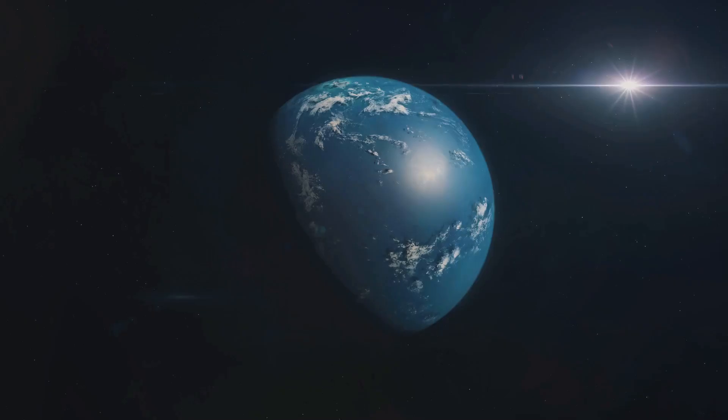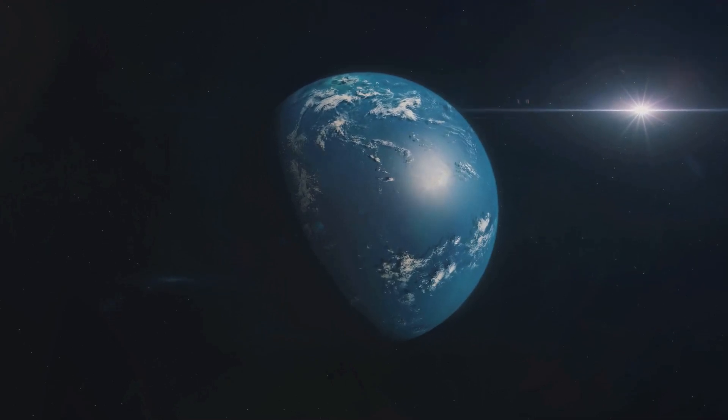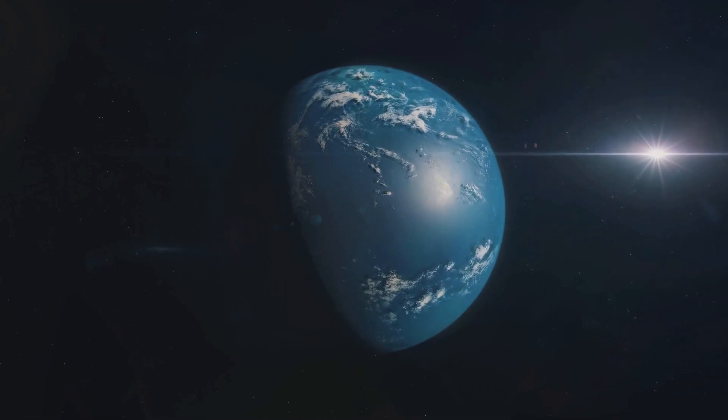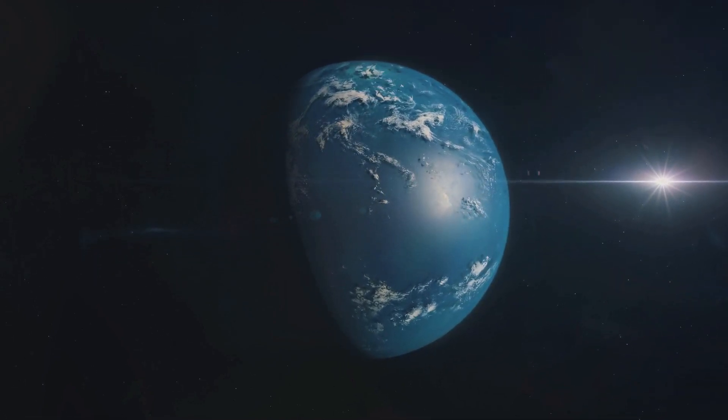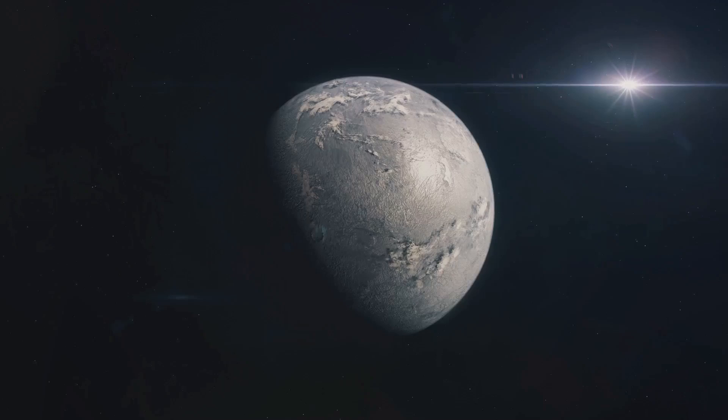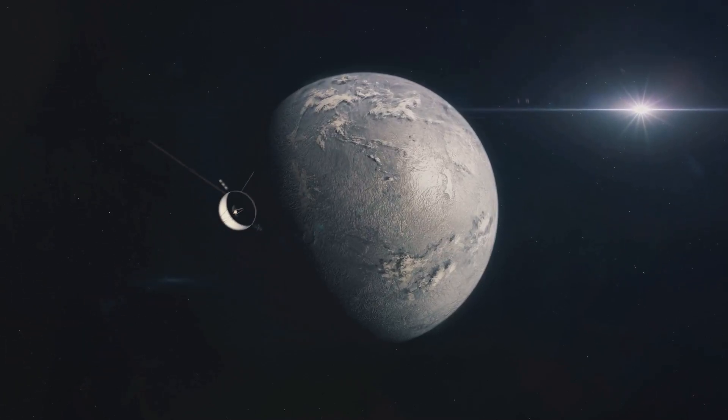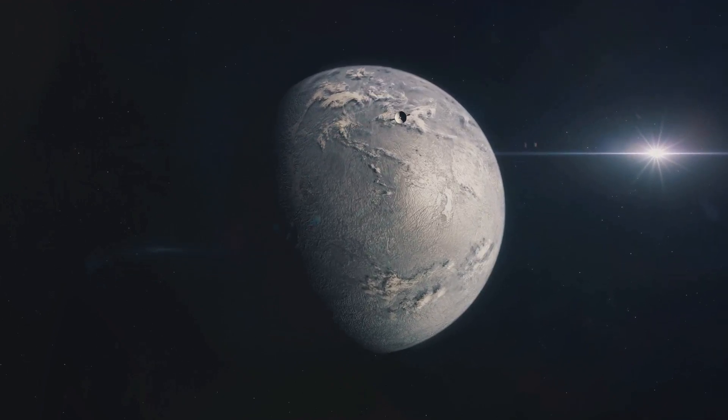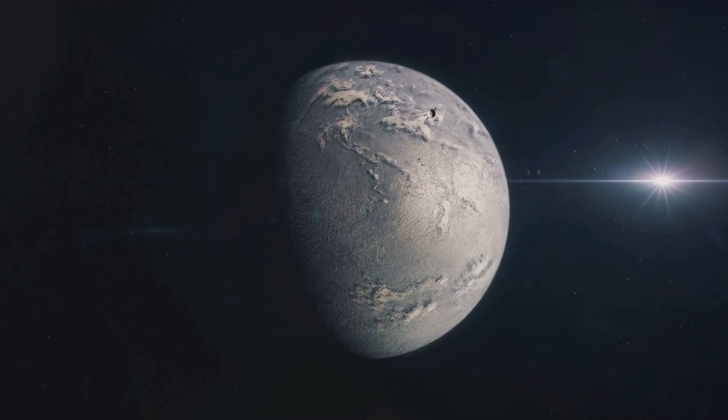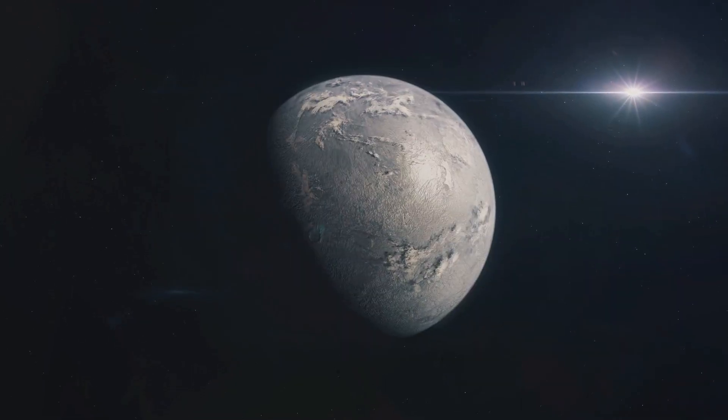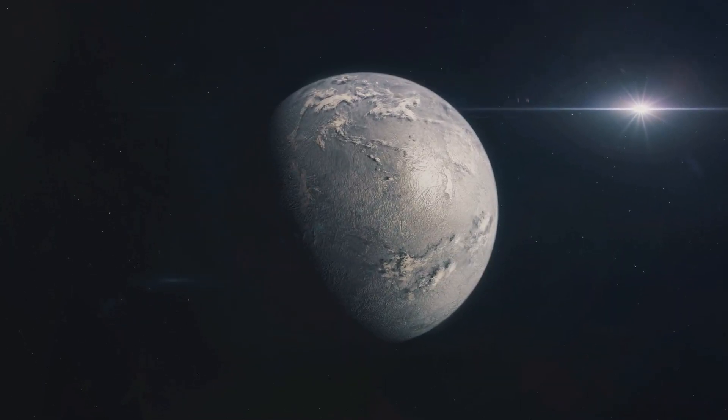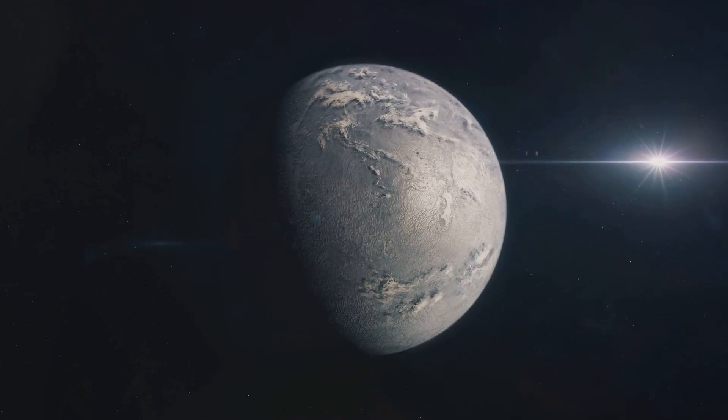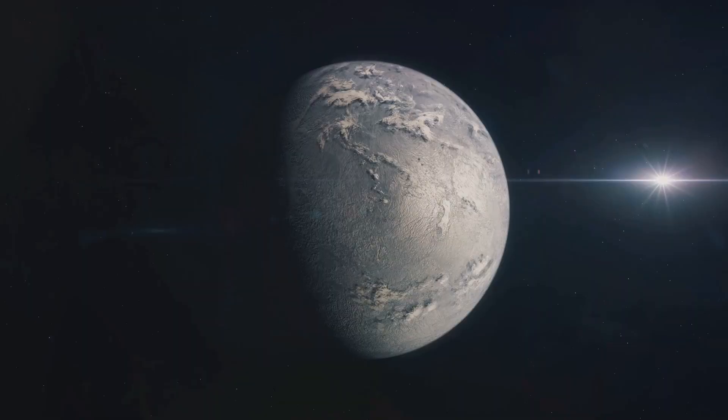Let's start with Proxima B. It's roughly Earth-sized and orbits in its star's habitable zone. That's the region around a star where conditions could be just right for liquid water to exist on a planet's surface, and where there's water, there might be life. However, being in the habitable zone doesn't necessarily mean Proxima B is habitable. It's tidally locked to its star. This means one side constantly faces the star, baking in perpetual daylight, while the other side is in eternal darkness. This could create extreme temperature differences and intense stellar winds, making it a harsh environment for life as we know it.